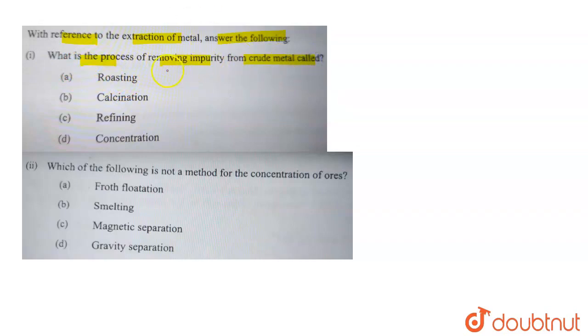This method of removing the impurity from the crude metal is actually known as refining. It is known as refining or purification. This is the method by which we remove the impurity from the crude metal.